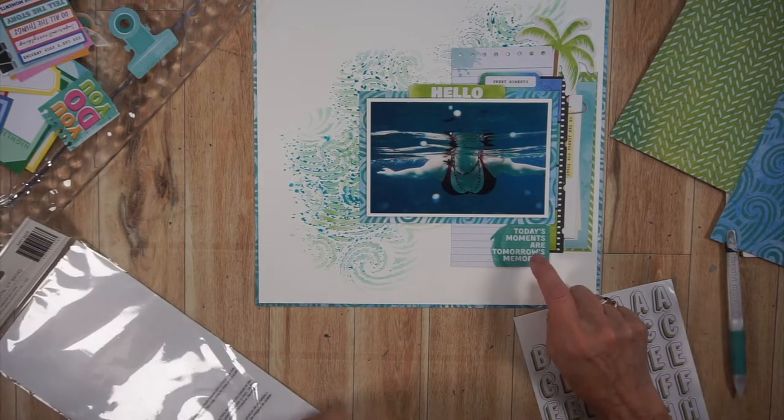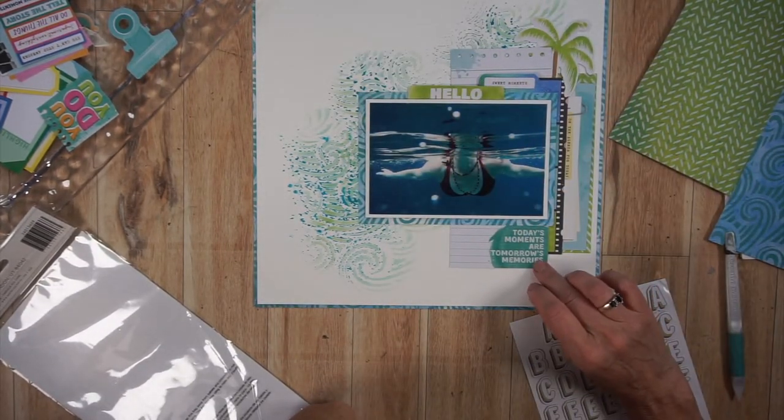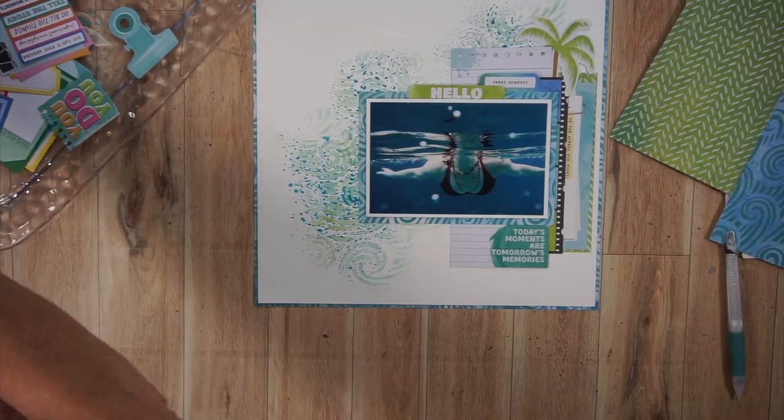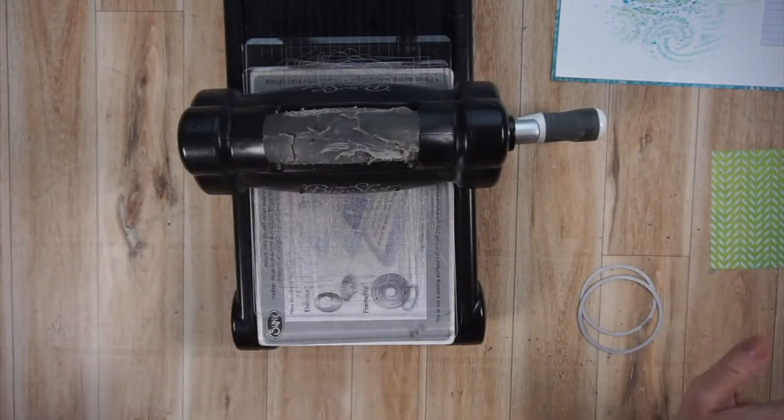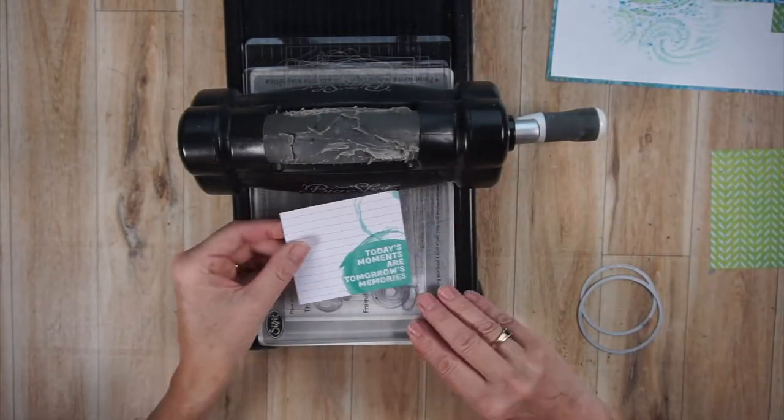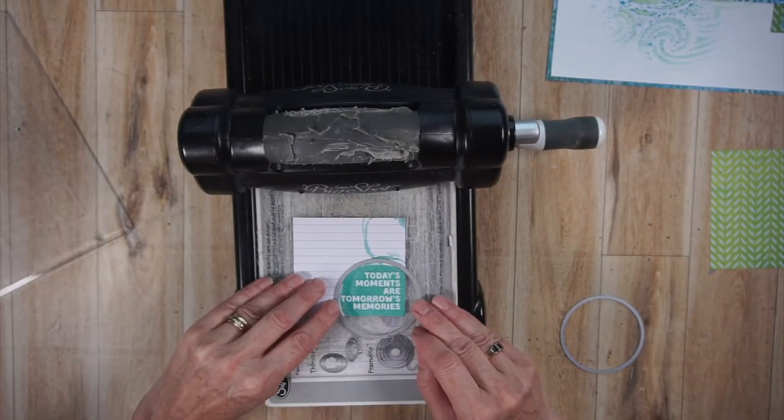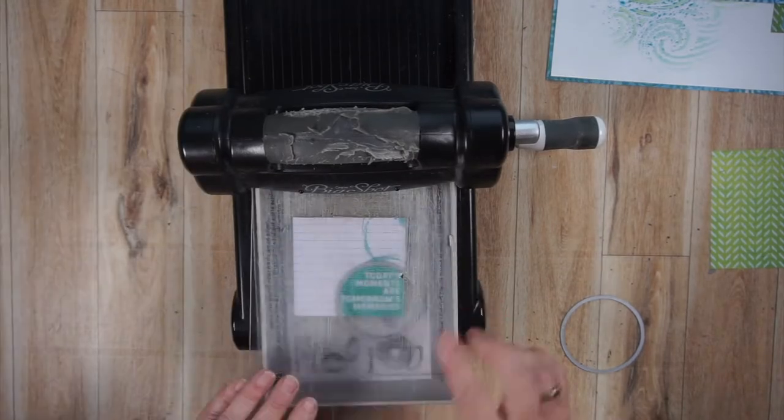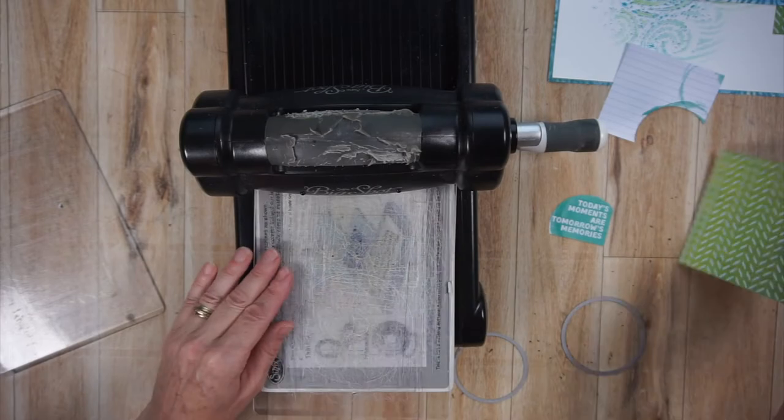Now at this point I'm jumping ahead of myself I definitely want a title I had the alphas from this Sweet Rush collection which are actually perfect but for some reason I'm not feeling it and I'm looking at that piece of ephemera that says today's moments are tomorrow's memories which is actually going to be my journaling box but what you see me doing with it is I'm cutting out with a circle die that part of the journaling box my plan is to basically crimp this up to make it more title worthy.